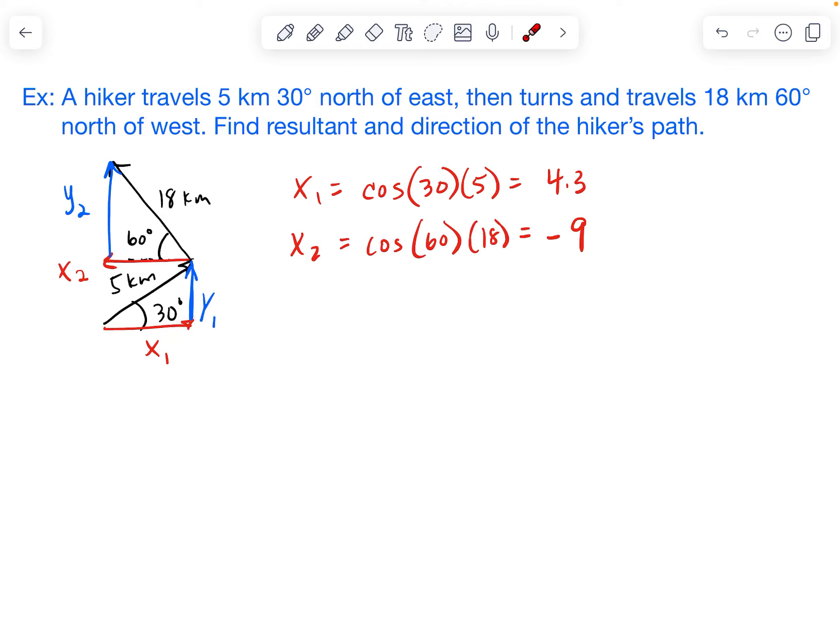For these y values, they're both going up. Up is a positive value. If we had one that was going down, we would make it negative. But in this case, we don't have one that is going down.